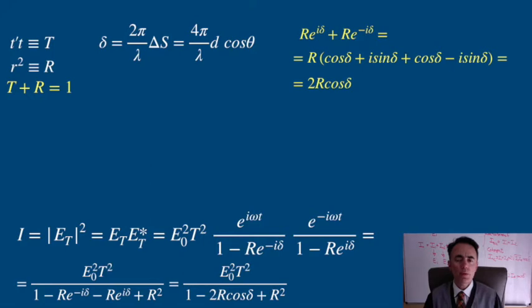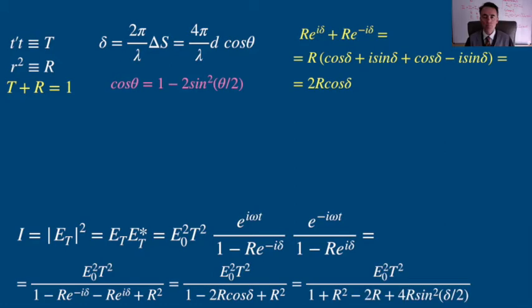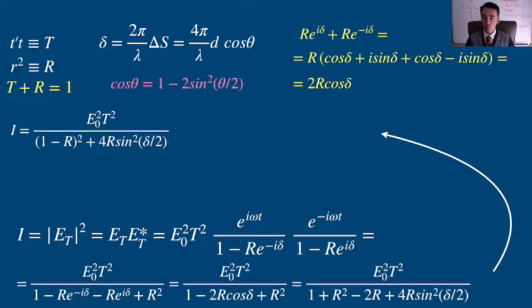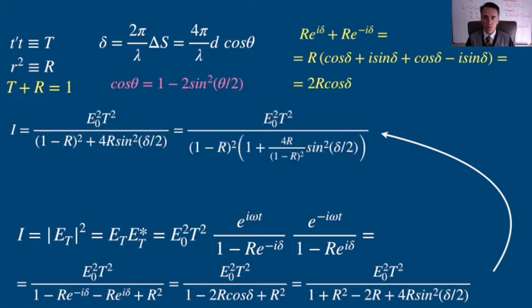Now, using this trigonometric identity, we can arrange 1 plus R squared minus 2R cosδ as the square of the subtraction, factor that out in the denominator.